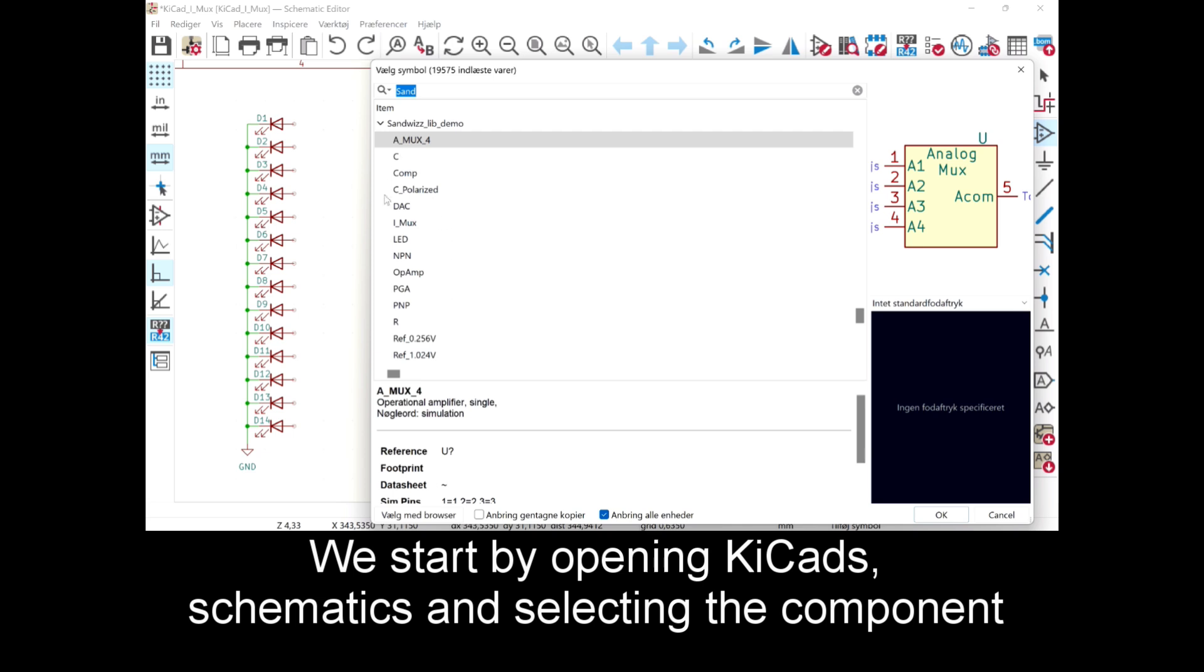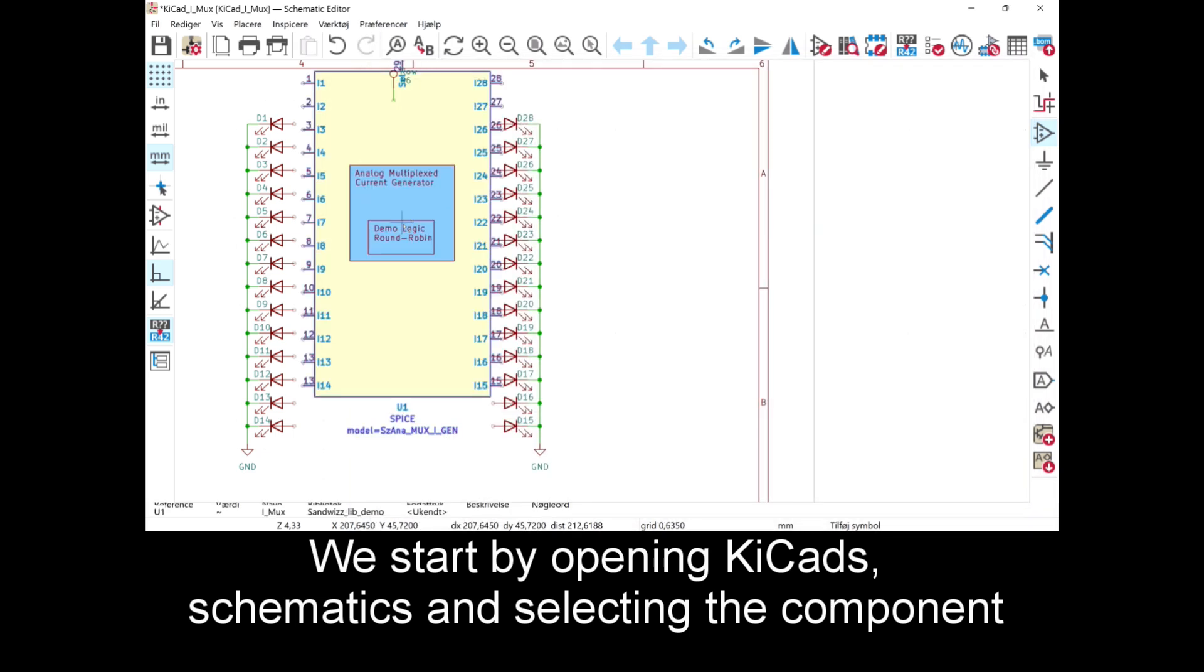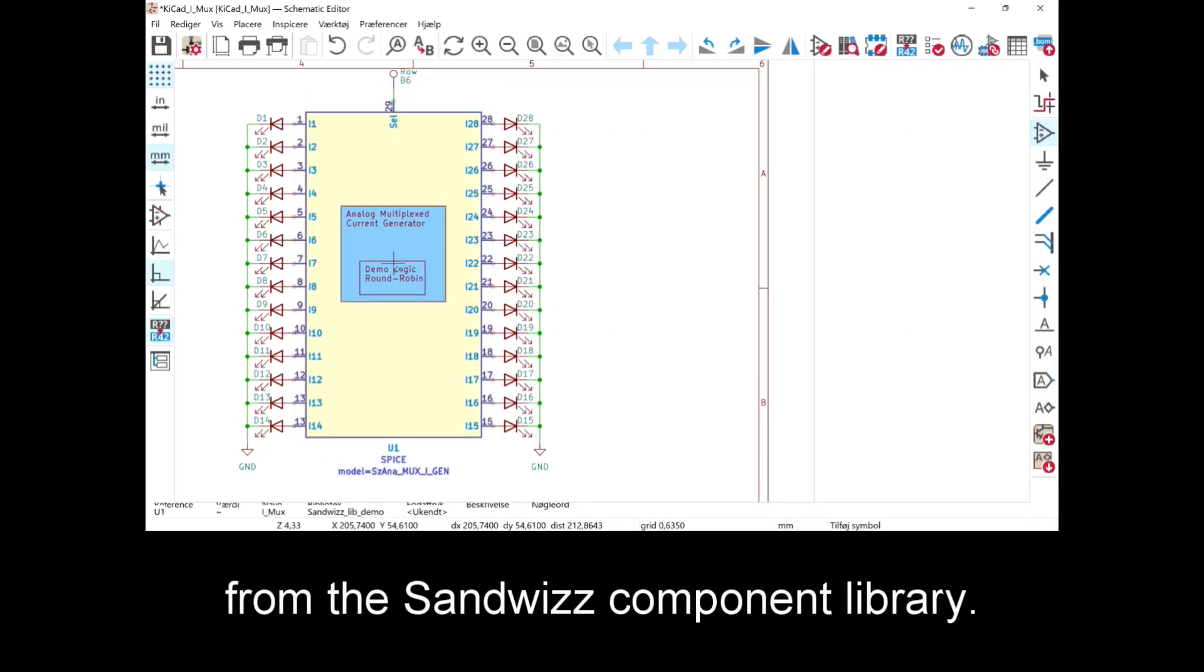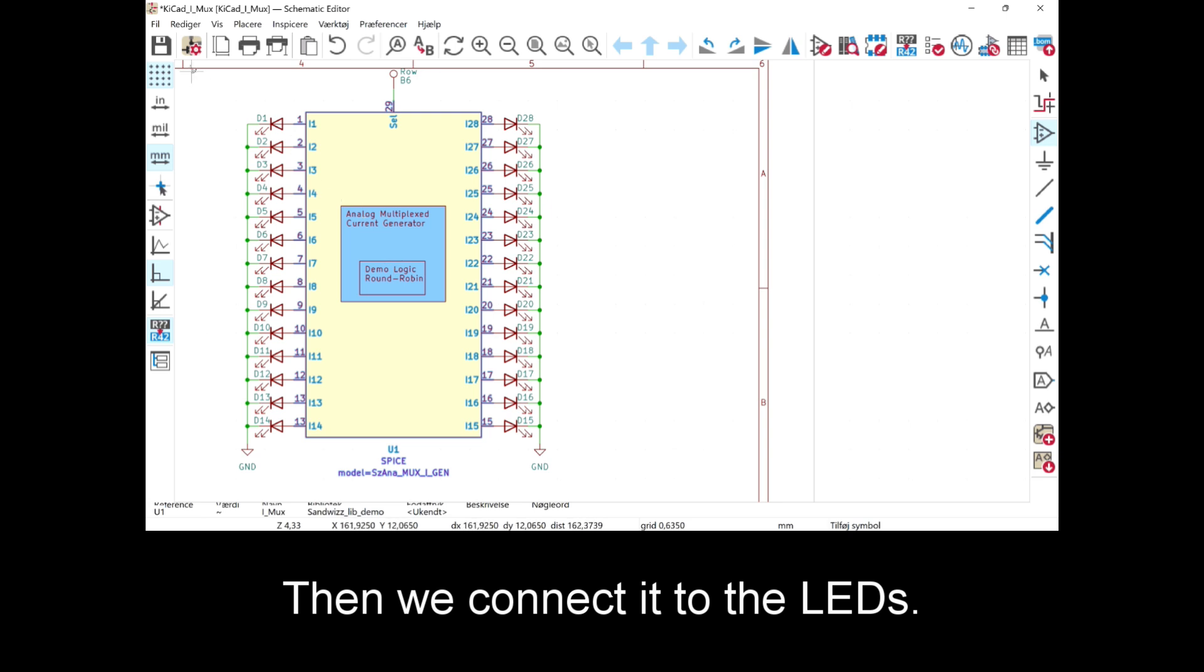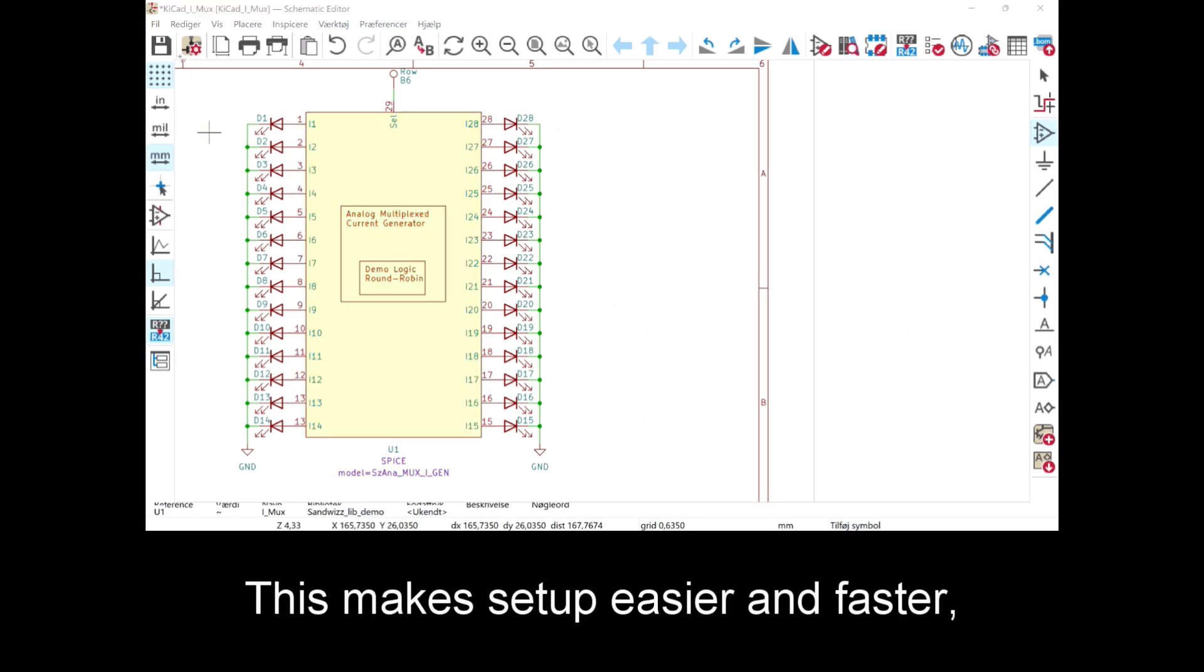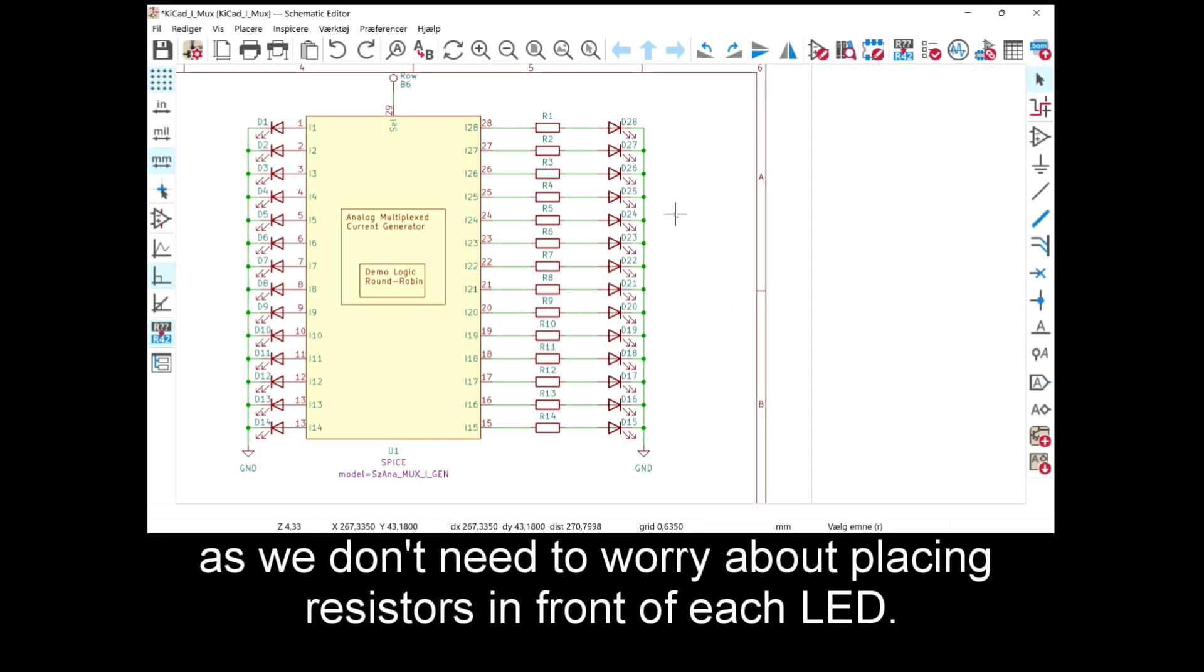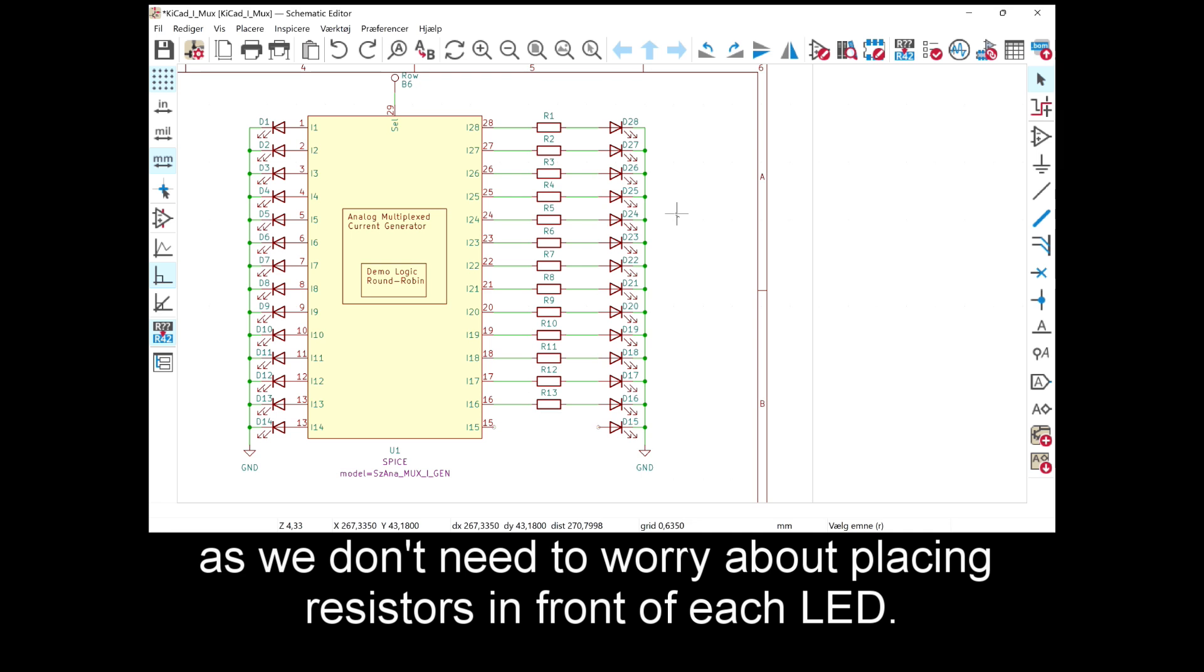We start by opening KiCad schematics and selecting the component from the SanWiS component library. Then we connect it to the LEDs. This makes setup easier and faster, as we don't need to worry about placing resistors in front of each LED.